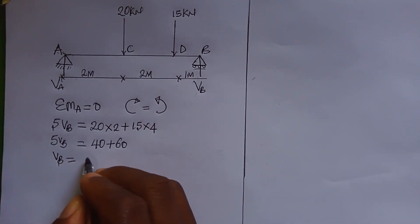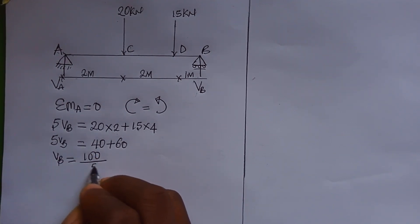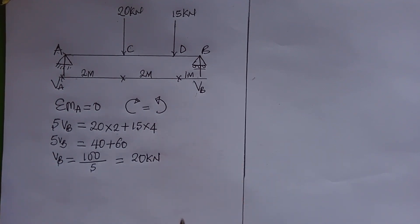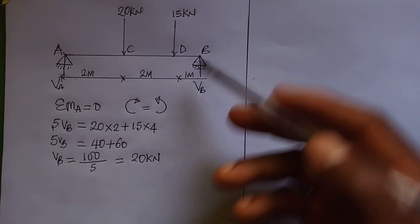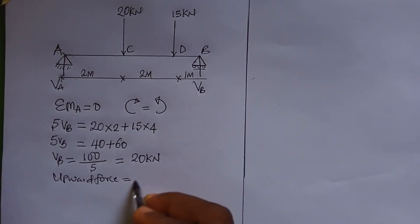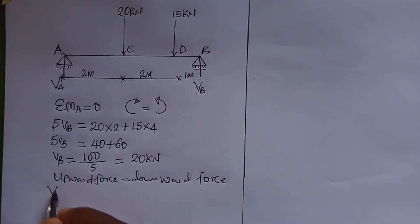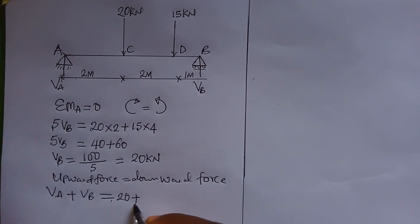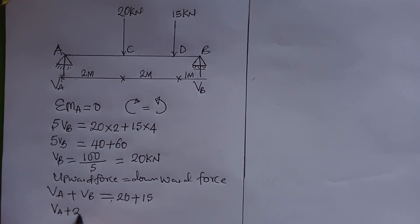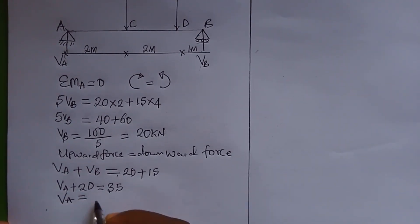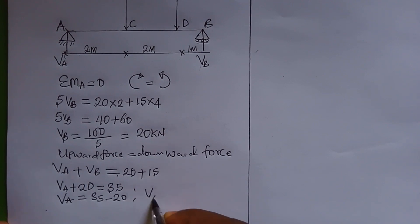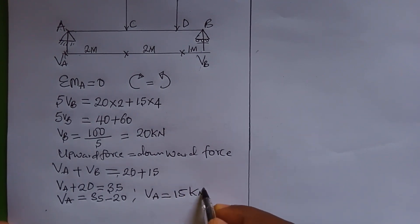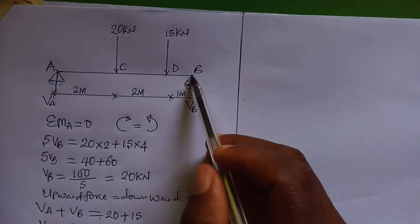VB equals 100 divided by 5, so VB equals 20 kilonewtons. Now let upward forces equal downward forces. Upward forces are VA and VB; downward forces are 20 kN and 15 kN. Since VB is 20, we have VA + 20 = 35, therefore VA equals 35 − 20 = 15 kilonewtons. Alternatively you may take moment at point B and get the same answer.